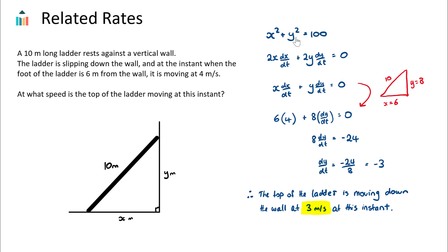We then add the derivative of the y² term with respect to t, which is 2y · dy/dt using exactly the same technique. The derivative of 100 — our hypotenuse squared — with respect to t is just 0, since the derivative of a constant is always 0. We can divide both sides by 2 to simplify. This gives us the relationship between x and y, where dx/dt is the rate x is changing with respect to time and dy/dt is the rate y is changing — both are speeds.